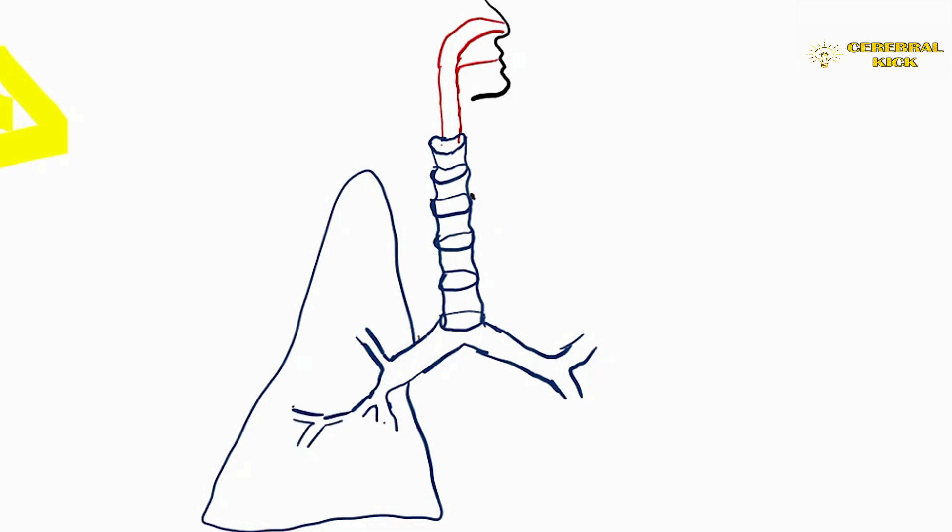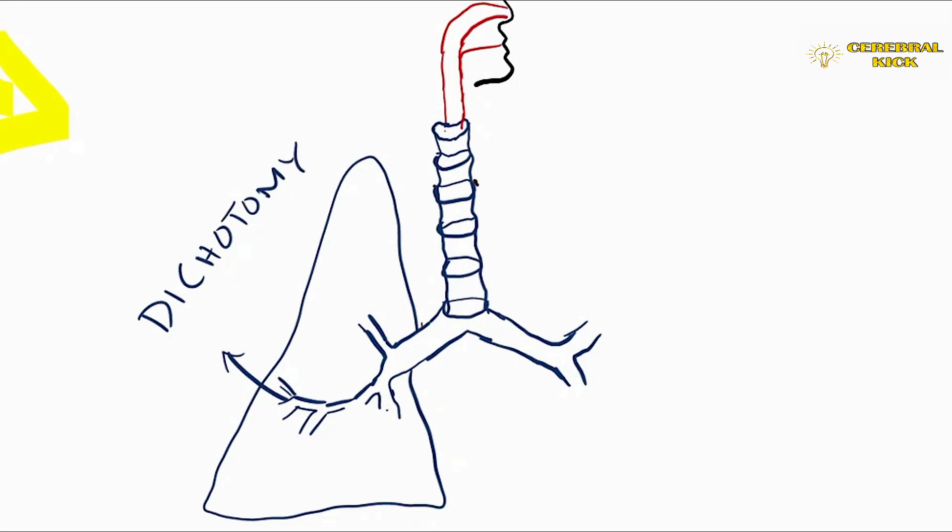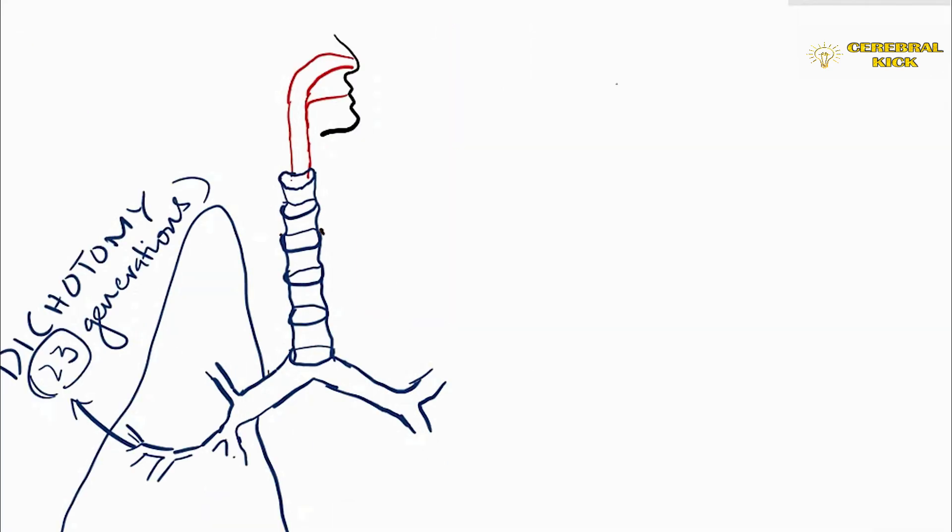Let's go into the understanding of airways and how they branch, the dichotomy of the airways into 23 generations from the trachea to the alveolar sac. By generations I mean trachea divides one generation and then further division of bronchi to two, three, four bronchioles all the way down to 23rd generation where the alveolar sac lies.